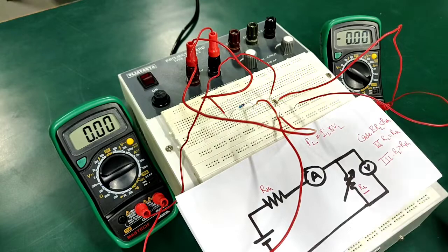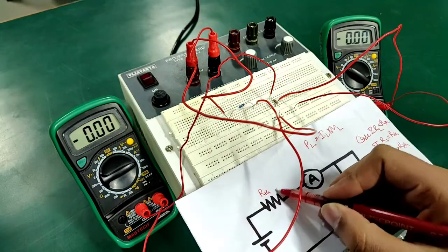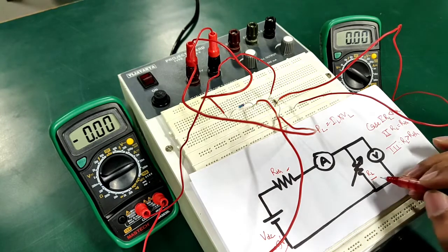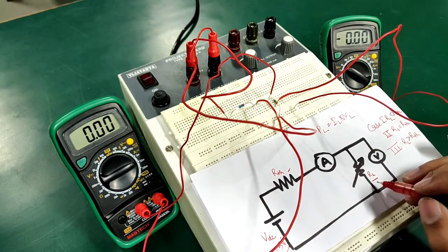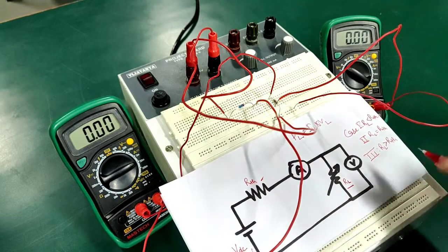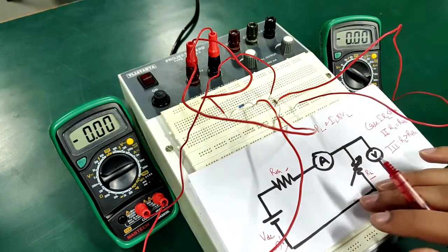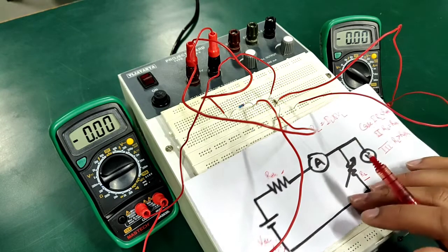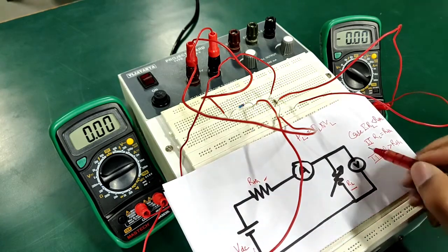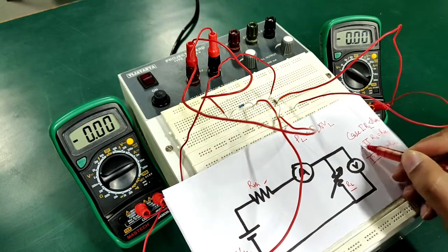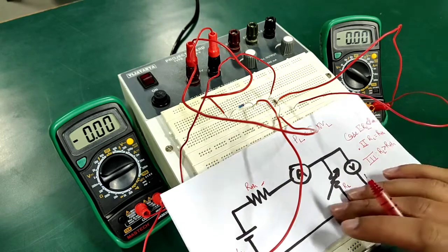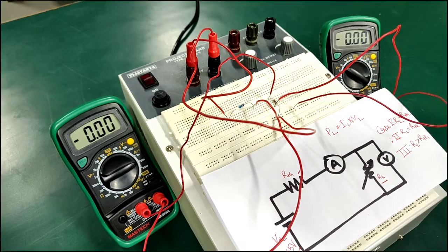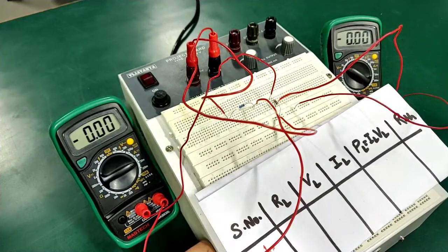So for this experiment your Rth would remain same, meaning the internal resistance of the circuit would remain same, only the load resistance would vary. And in each case we will find out the power delivered to the load. If the power delivered to the load is maximum in case of case number two wherein RL equals Rth, we will be able to say that our maximum power transfer theorem has been verified.